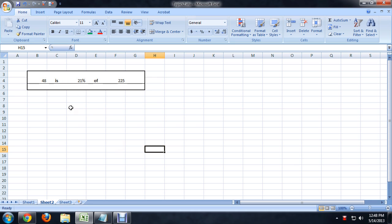So here we are inside of Excel, and you can see I've formatted this out really pretty. It says 48 is 21% of 225. Now we can change this 48 to say 52 or 83, and it automatically changes the percent for us.